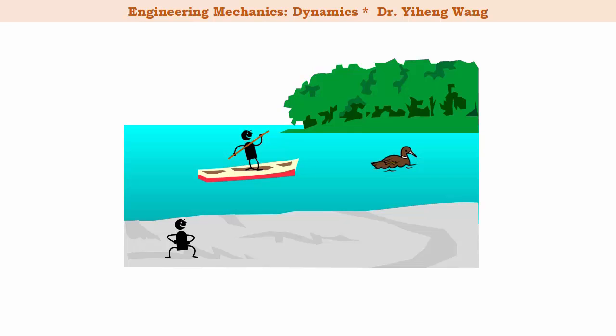Just from experience you should be able to tell that the motion of the duck looks different to these two different observers. To the eyes of the observer on the boat the duck probably swims much slower than to the eyes of the observer on the bank. We will use this example to explain relative motion.